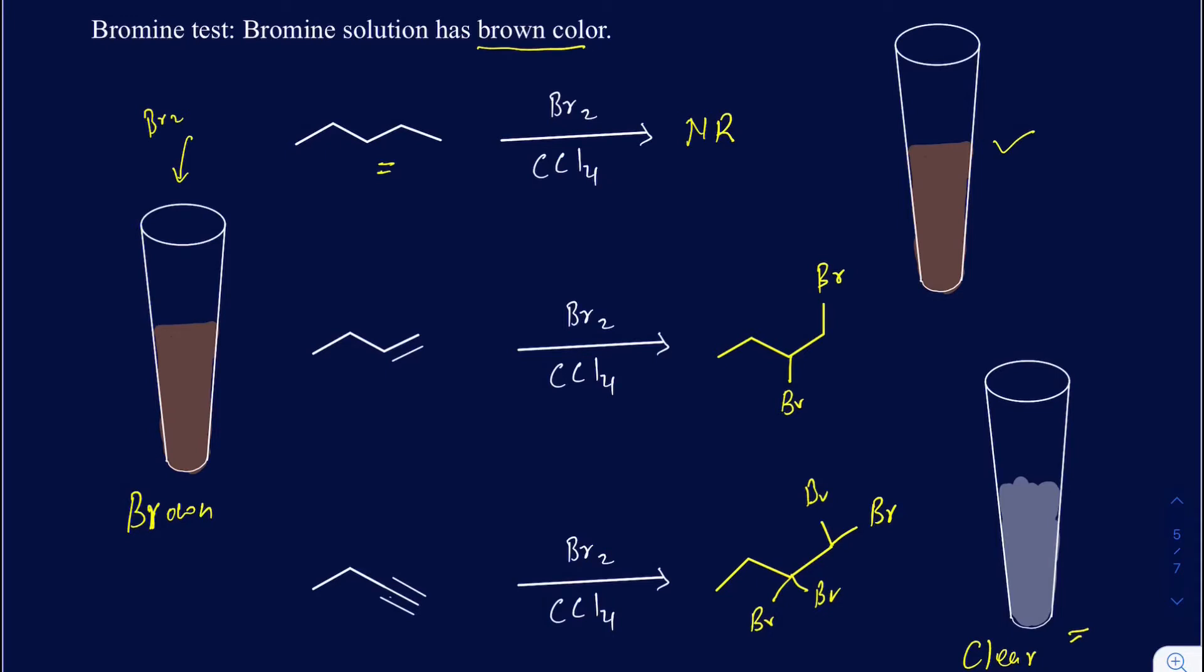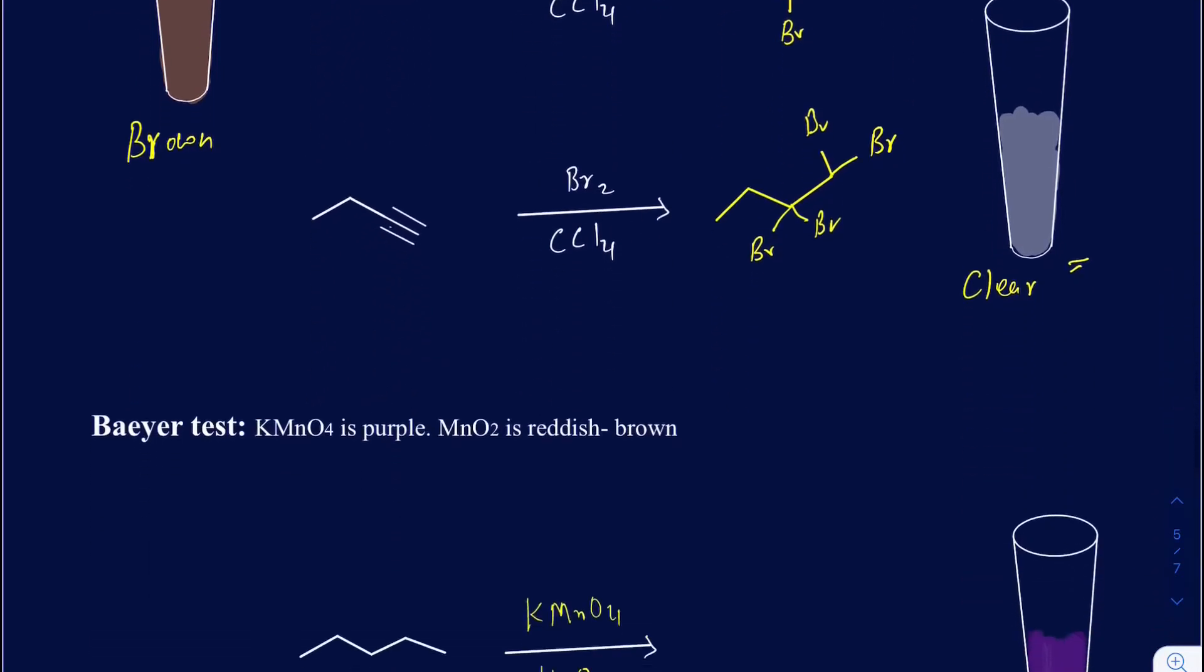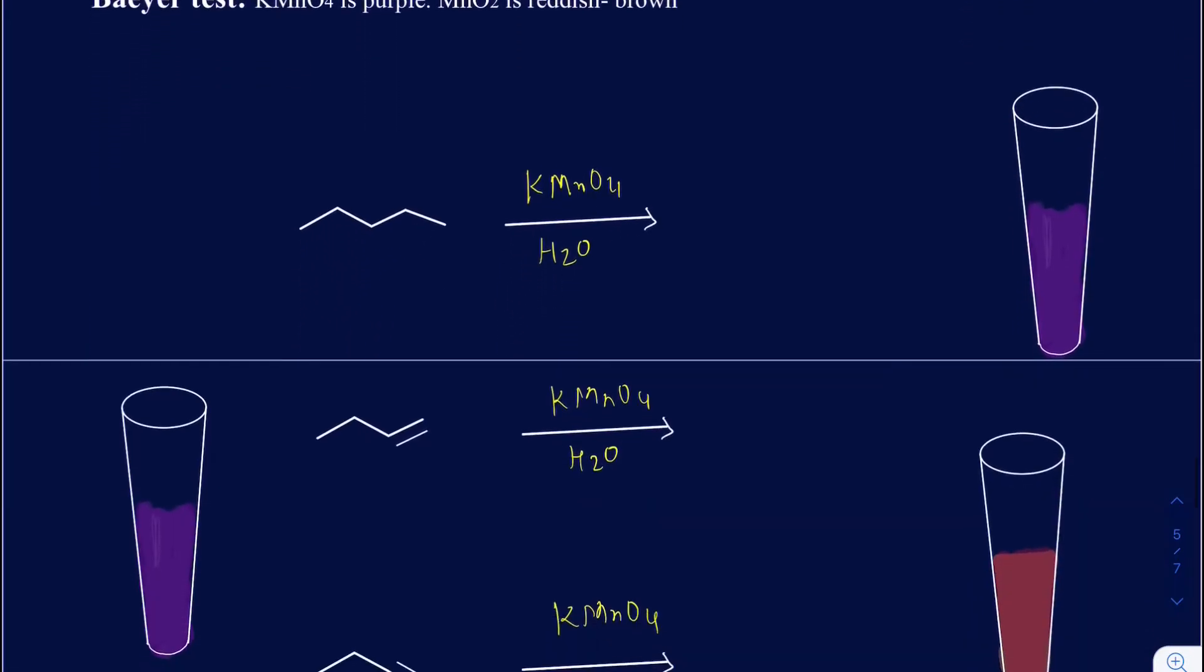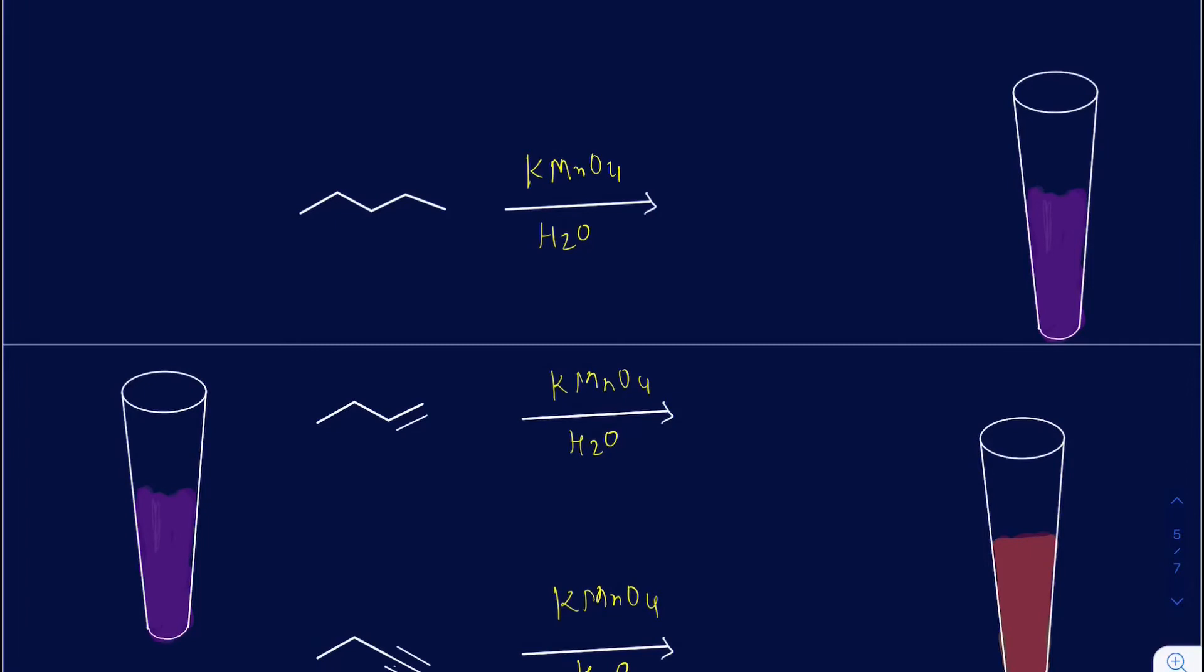The bromine test, when it's run to test unsaturation, along with that, you also run the KMnO4 or the Baeyer test, just to make sure that there was nothing wrong with the bromine test, because you may run into impurities in the compound sometimes and you may get a false positive. So to confirm that there is an unsaturated compound present, you run a Baeyer test.